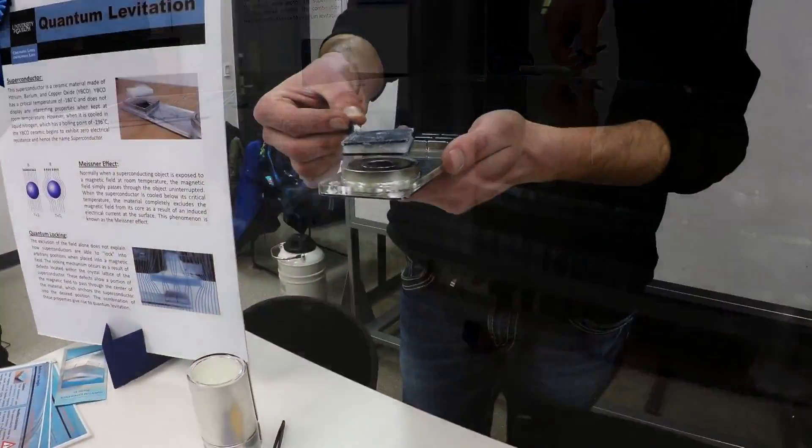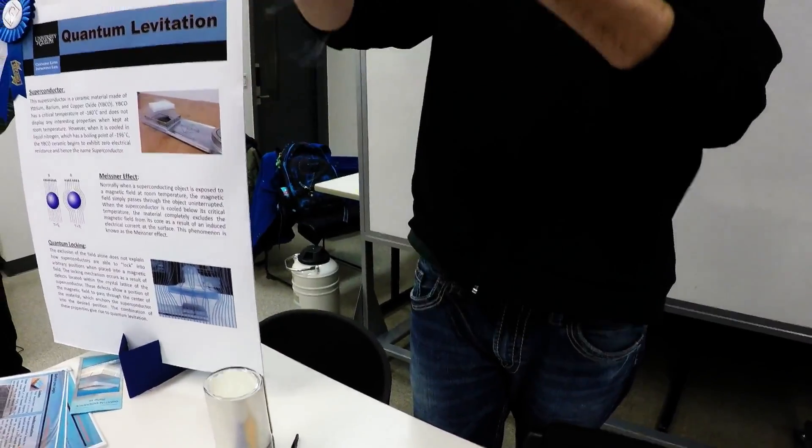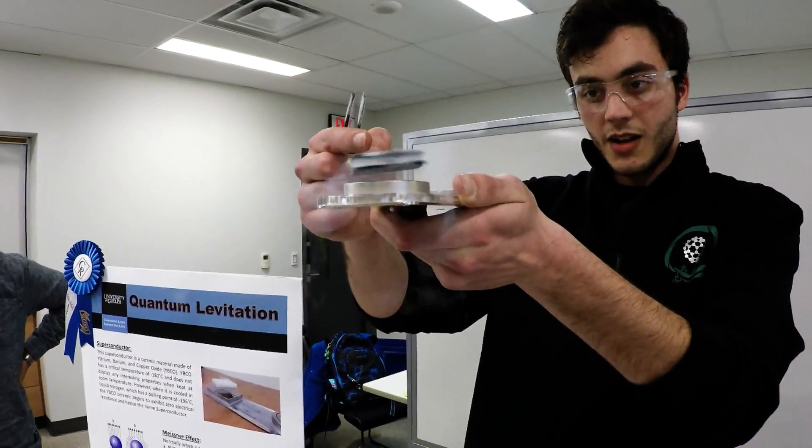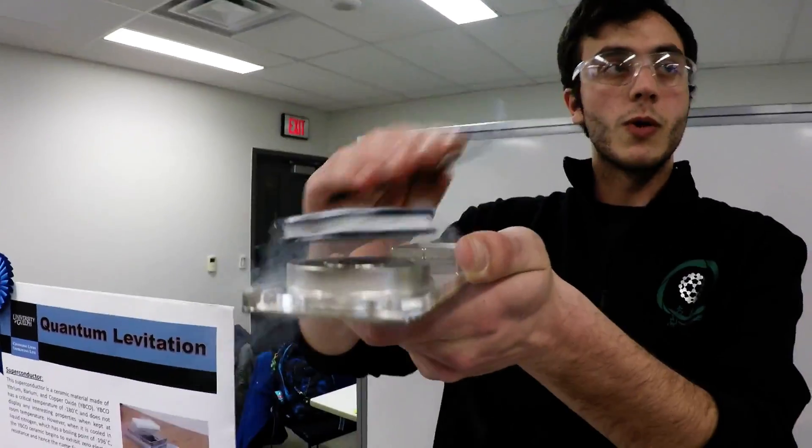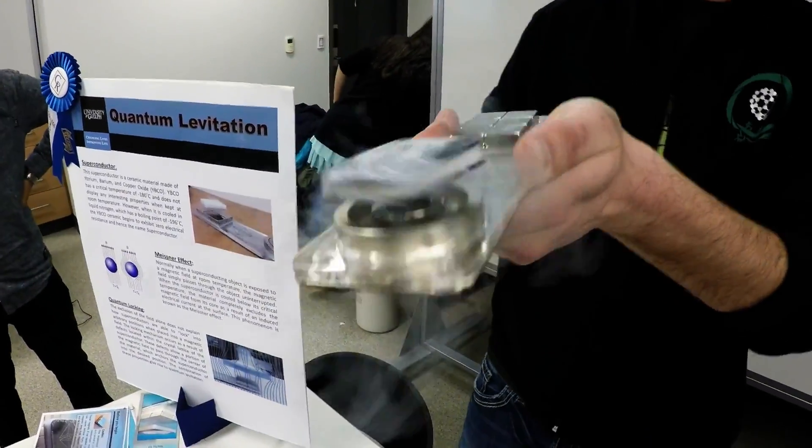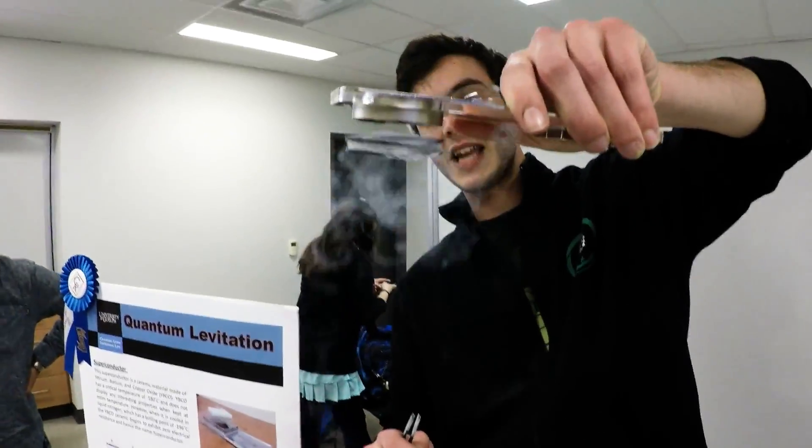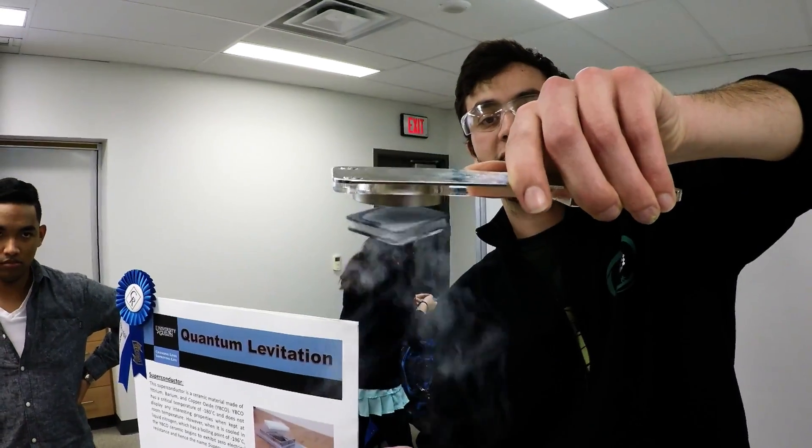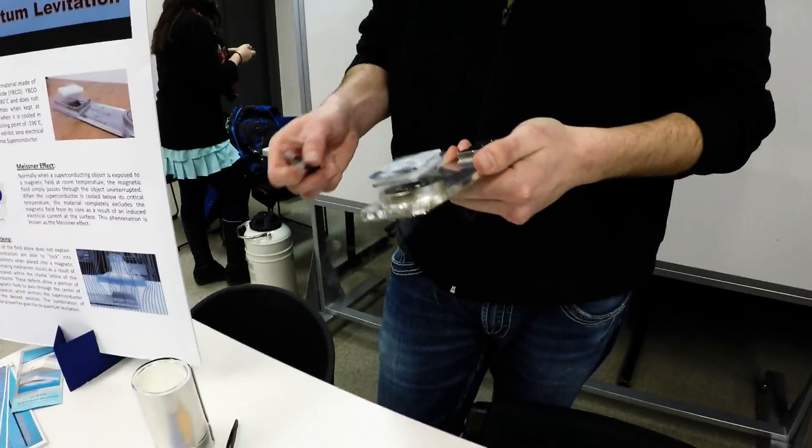Now I'm pinning it on an axis in the center. I can spin it along that axis and it will remain at that height I set it at until it's warmed up. I can turn it upside down. It will stay locked. But it doesn't last as long this way because now it's also fighting gravity.